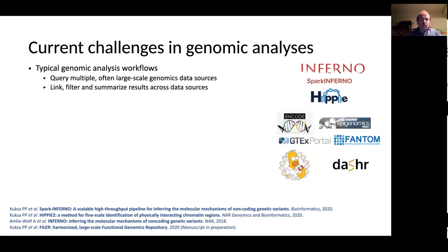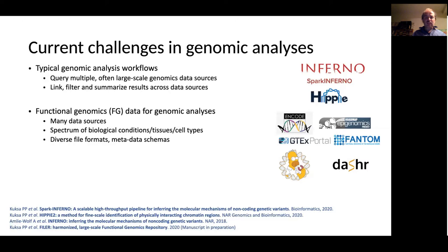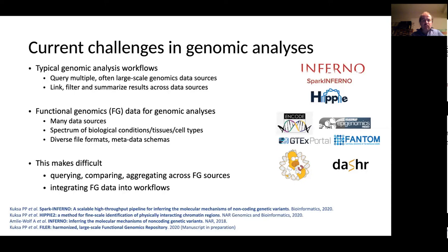As we all know, typical genomic workflows require querying multiple and often large-scale genomic data sources, where the results of these queries are then linked, filtered, and summarized across these data sources. However, the functional genomic data required for this analysis is distributed across many data sources. Individual datasets are generated for various biological conditions, various tissues and cell types, and the datasets themselves are stored in a variety of formats and described in often data-source-specific metadata schemas. So all of this together makes it difficult to query, compare, and aggregate functional genomic data across data sources, and in general, it makes it challenging to integrate this data into new or existing workflows.